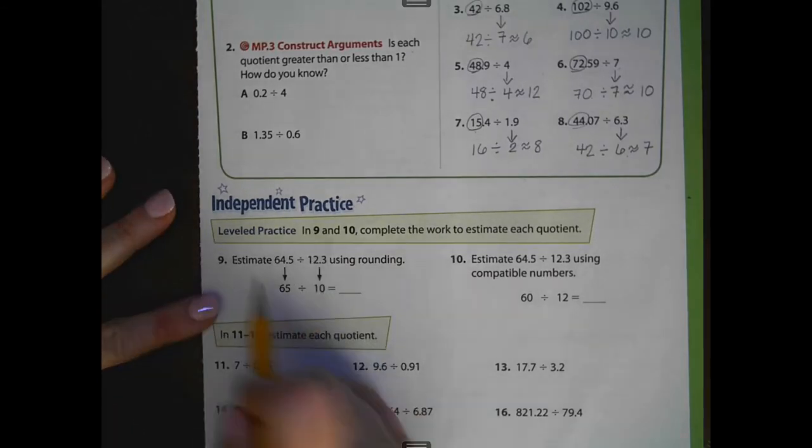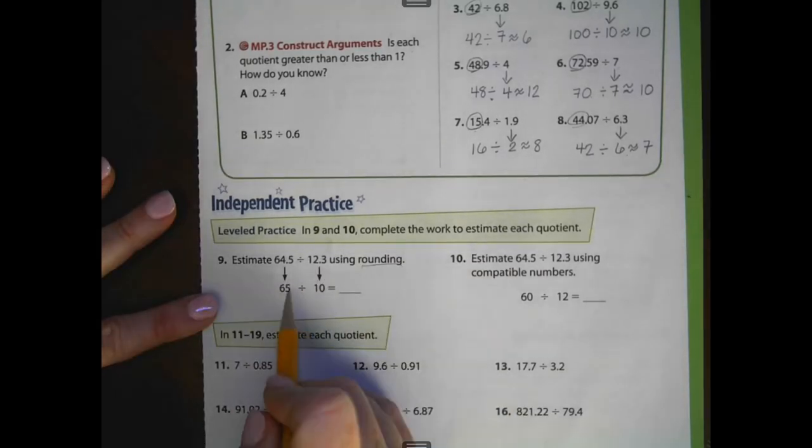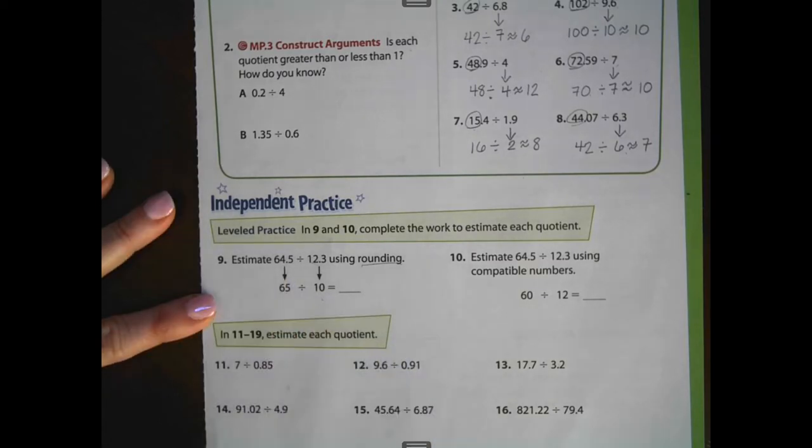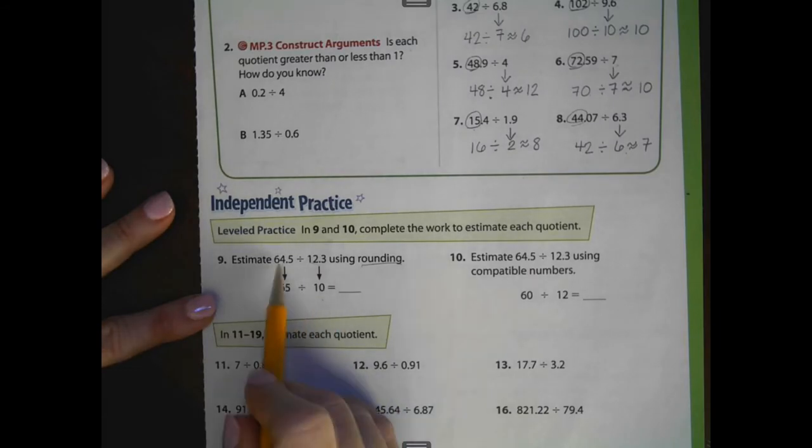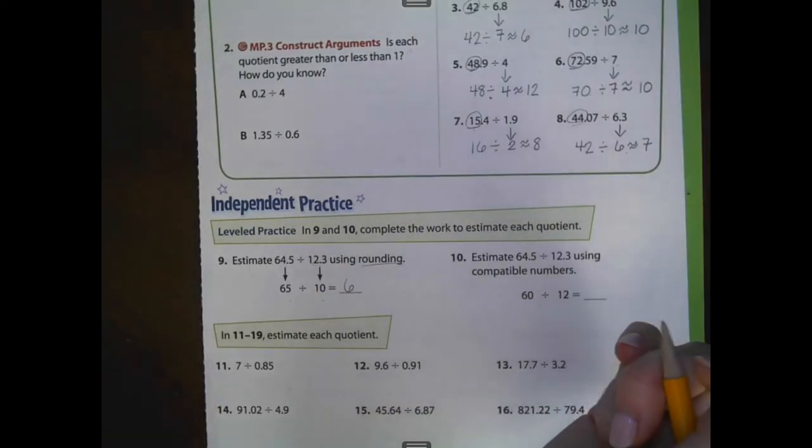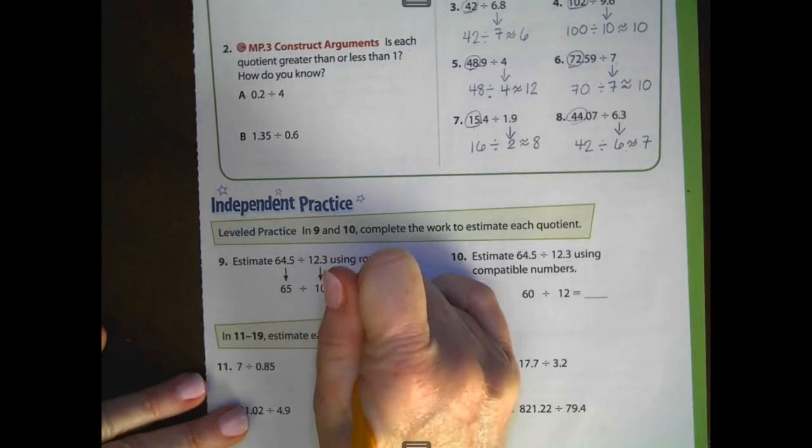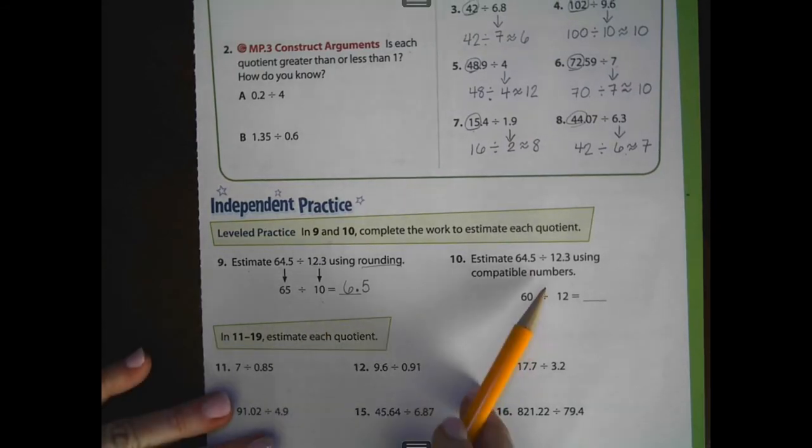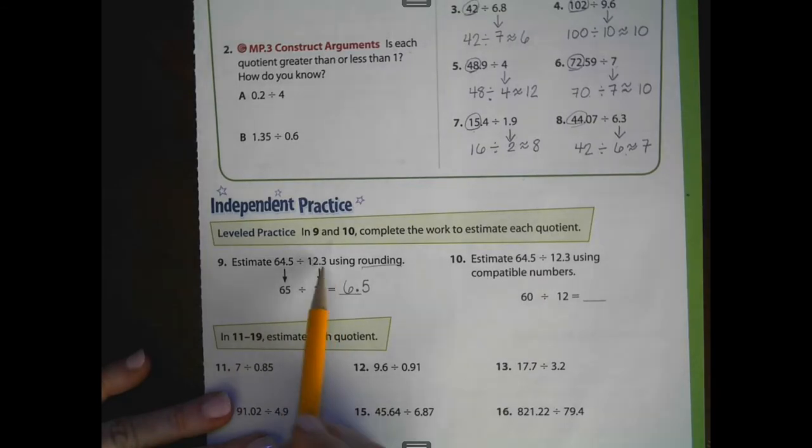They're telling us that if we estimate 64 and 5 tenths divided by 12 and 3 tenths using rounding, that they are going to round 12 and 3 tenths to 10. I guess they're not very comfortable with their 12 tables. And they're going to make 64 and 5 tenths into 65. And they know that if you divide 10 into 65, it is going to go 6 times, right? 6 times 10 is 60. And then they're going to be 5 tenths left over. So 6 and 5 tenths. I think it would have been easier.